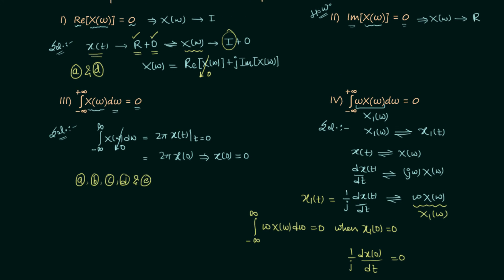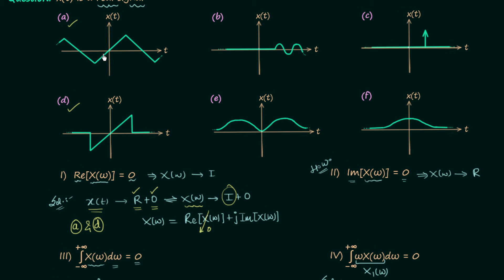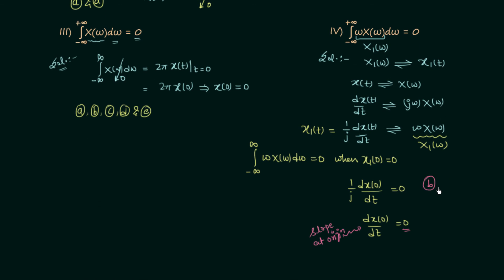Looking at the waveforms: signal A has a slope at the origin that is not equal to 0. Signal B has slope equal to 0. Signal C has slope equal to 0. Signal D has slope not equal to 0. Signal E has slope equal to 0. Signal F also has slope equal to 0. So the slope is 0 for B, C, E, and F, and not 0 for A and D. The answer for part 4 is B, C, E, and F.